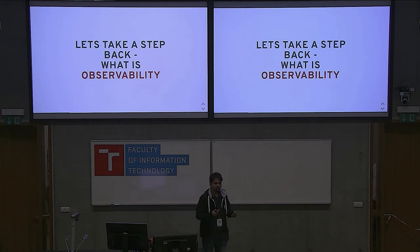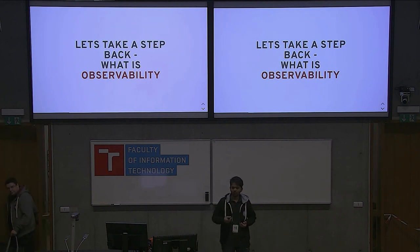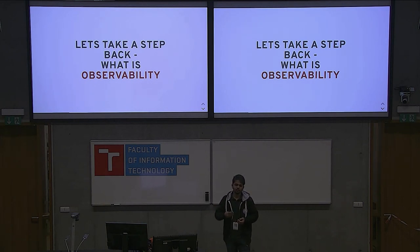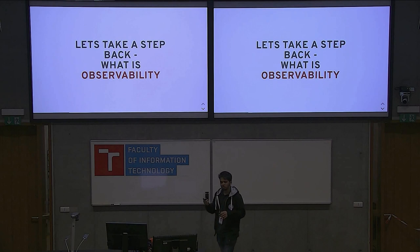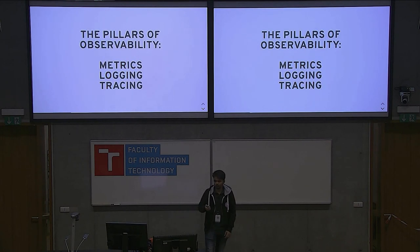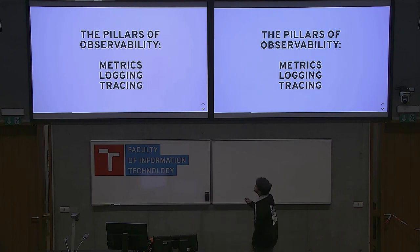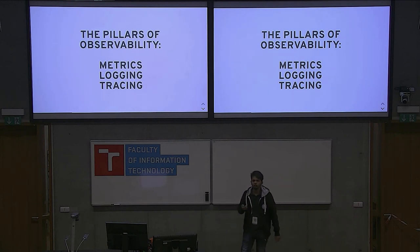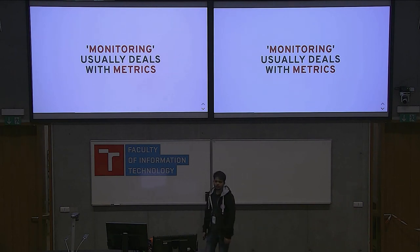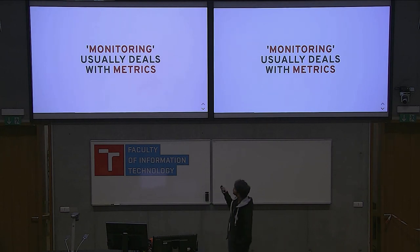What is observability of your application? If you are a developer running your code in production and owning the code in production, you need to know how the application health looks like — if an application fails, what are the failure points or the failure modes. All of that is encompassed in a concept called observability. There are three pillars to observability: metrics, logging, and tracing. You cannot do with only one of these. If you need complete observability, you need all three, but today we are going to focus on metrics because monitoring usually deals with metrics.